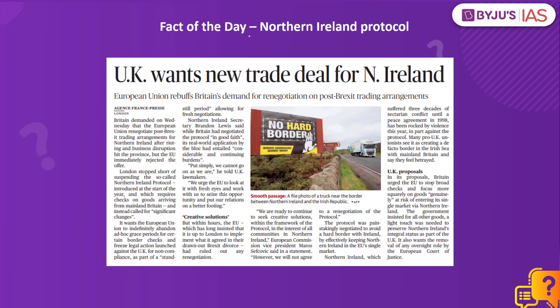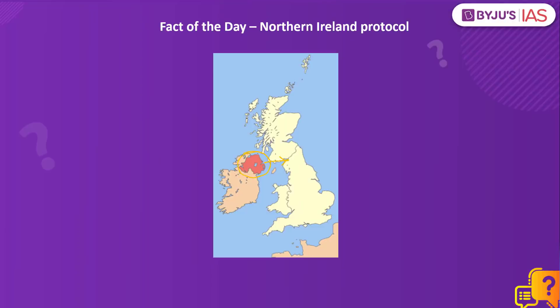Moving on to the fact of the day: the Northern Ireland Protocol. Britain has demanded that the trading arrangement for Northern Ireland decided upon post-Brexit must be renegotiated. Northern Ireland is a part of the United Kingdom. Following Brexit — the exit of Britain from the European Union — the border with the Republic of Ireland is the only land border between the UK and the EU. Since free movement of goods between this border would become complicated, Prime Minister Boris Johnson negotiated the Brexit Treaty on Northern Ireland, also called the Northern Ireland Protocol.